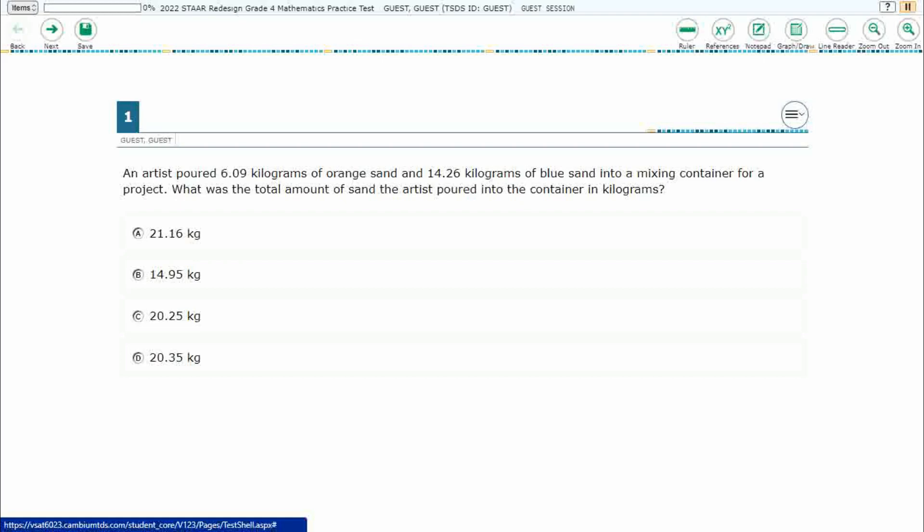So we have an artist pouring 6.09 or 6 and 9 hundredths kilograms of orange sand and 14.26 or 14 and 26 hundredths kilograms of blue sand into a mixing container. We need to find the total amount of sand.